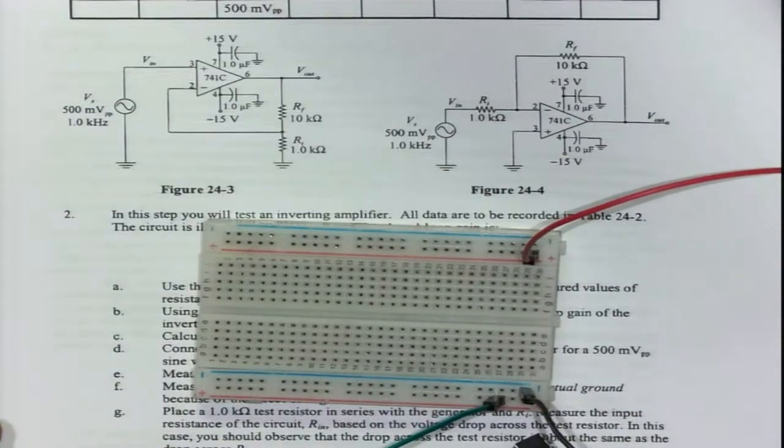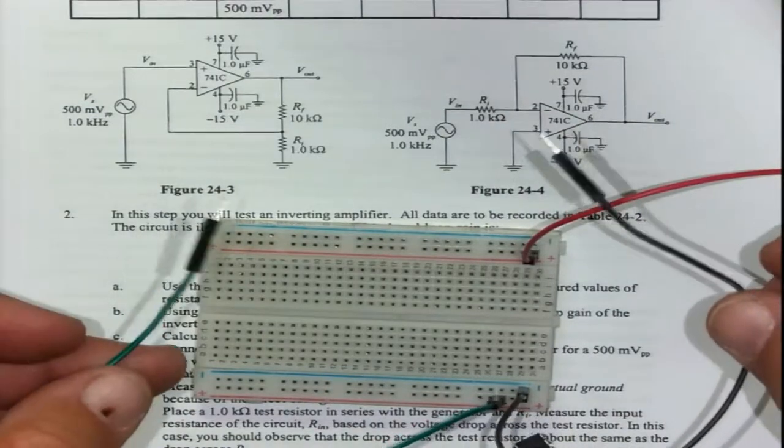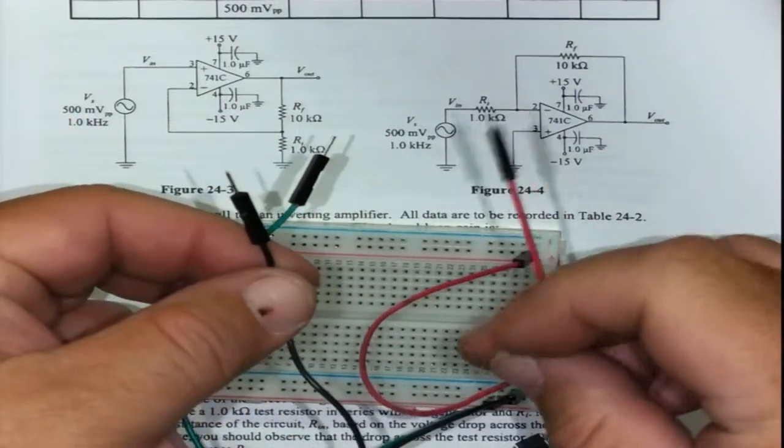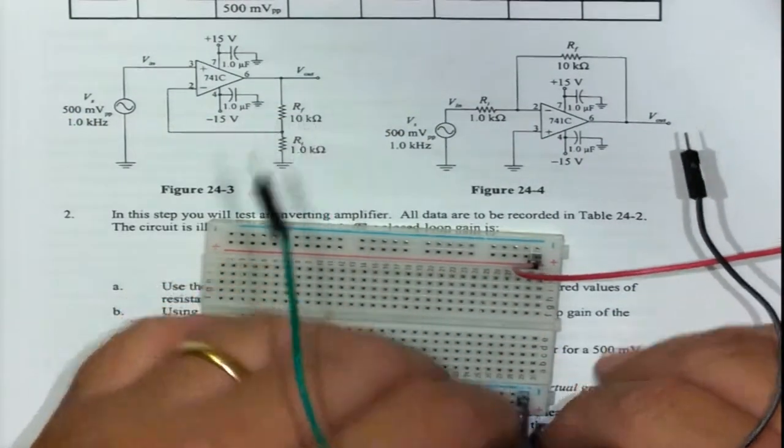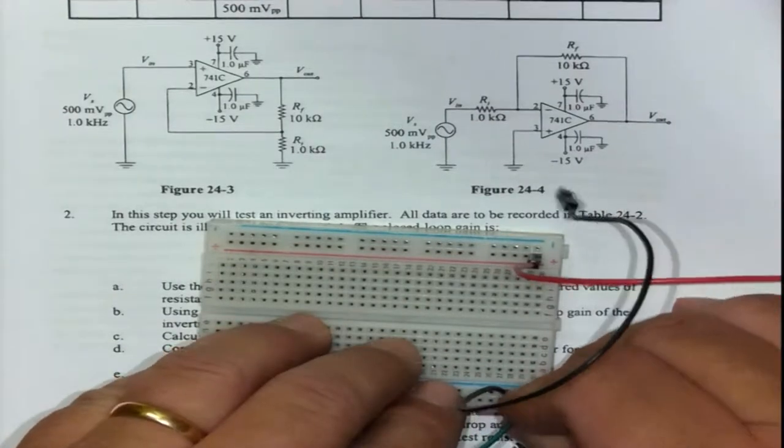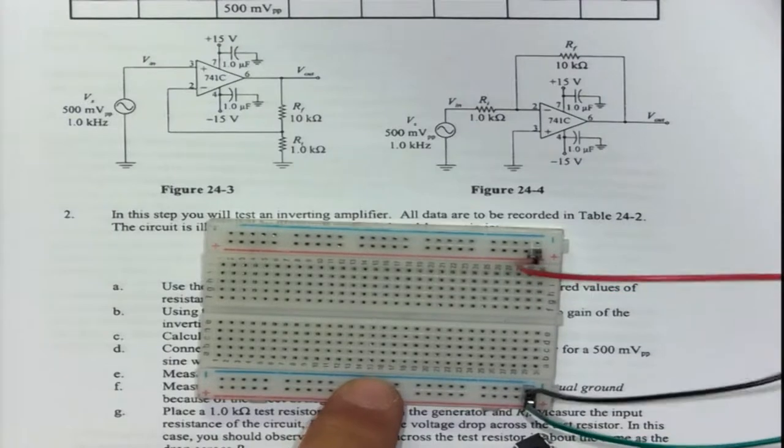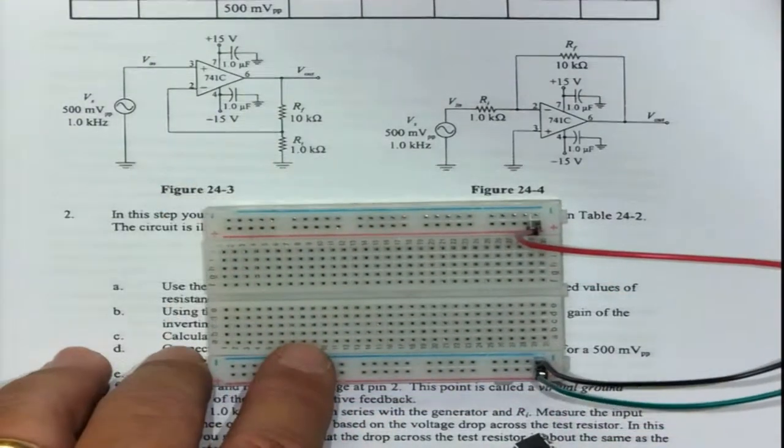Green I usually use as my minus fifteen line. I encourage the students to do that because the power supply is set up to give me ground, minus fifteen, and plus fifteen. The breadboard can be set up the same way because I'm using my three power rails to give me my three power sources.